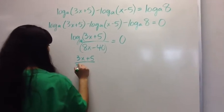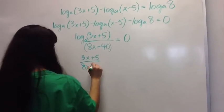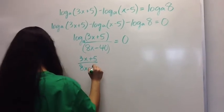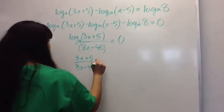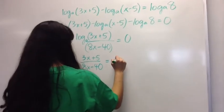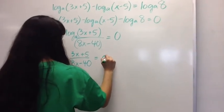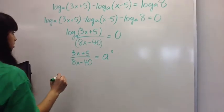Then you want to change it from log form to exponential form. So that would be 3x plus 5 divided by 8x minus 40 is equal to a to the 0, which is 1.